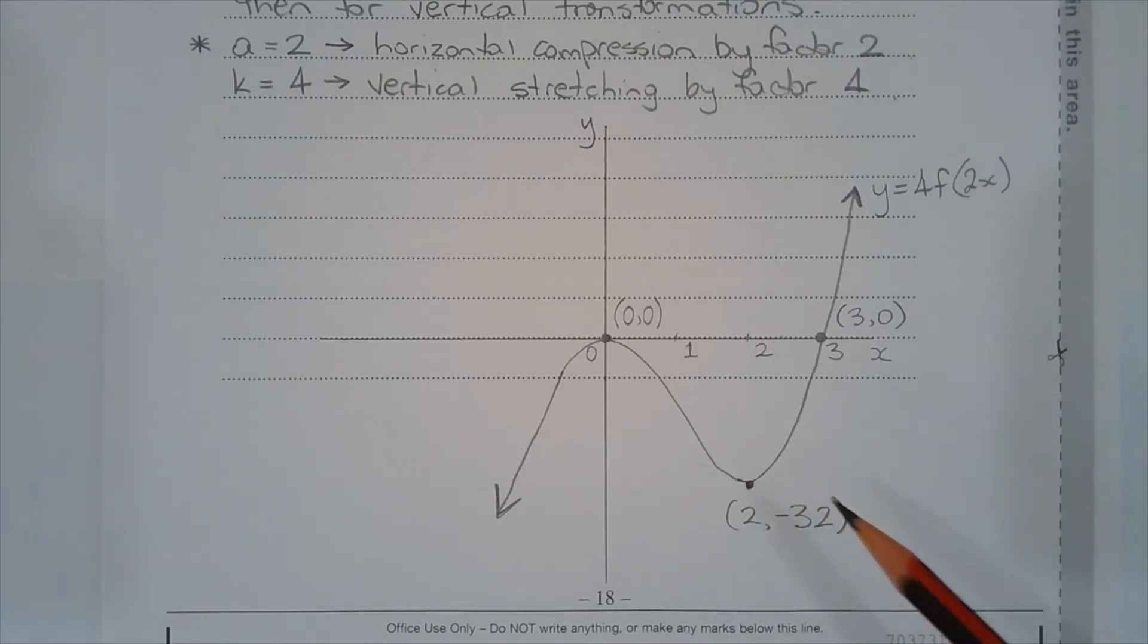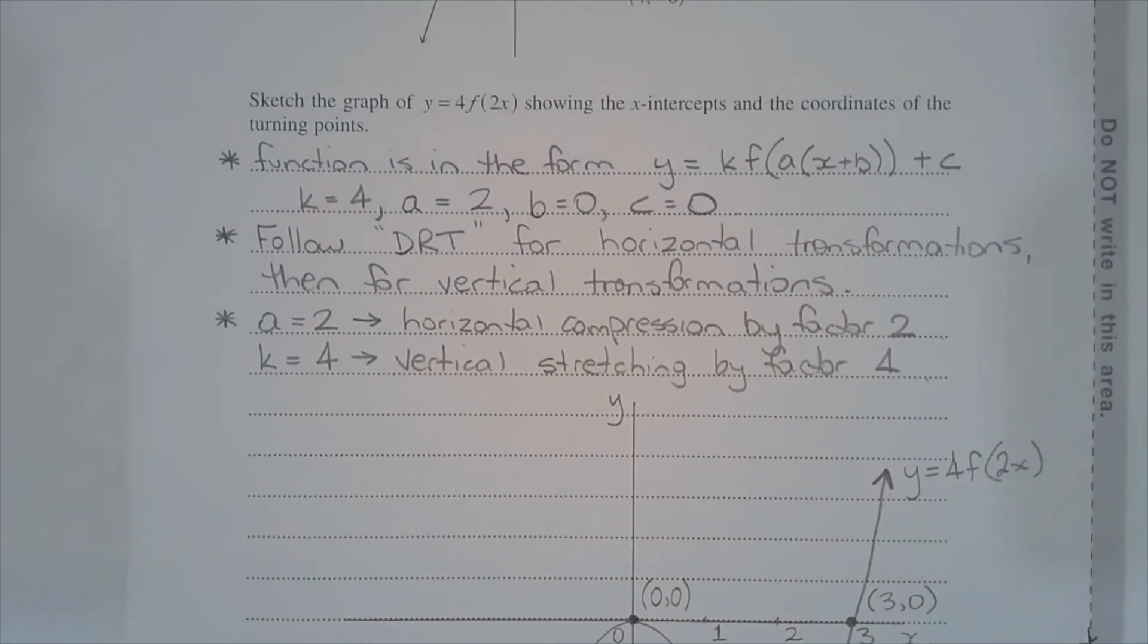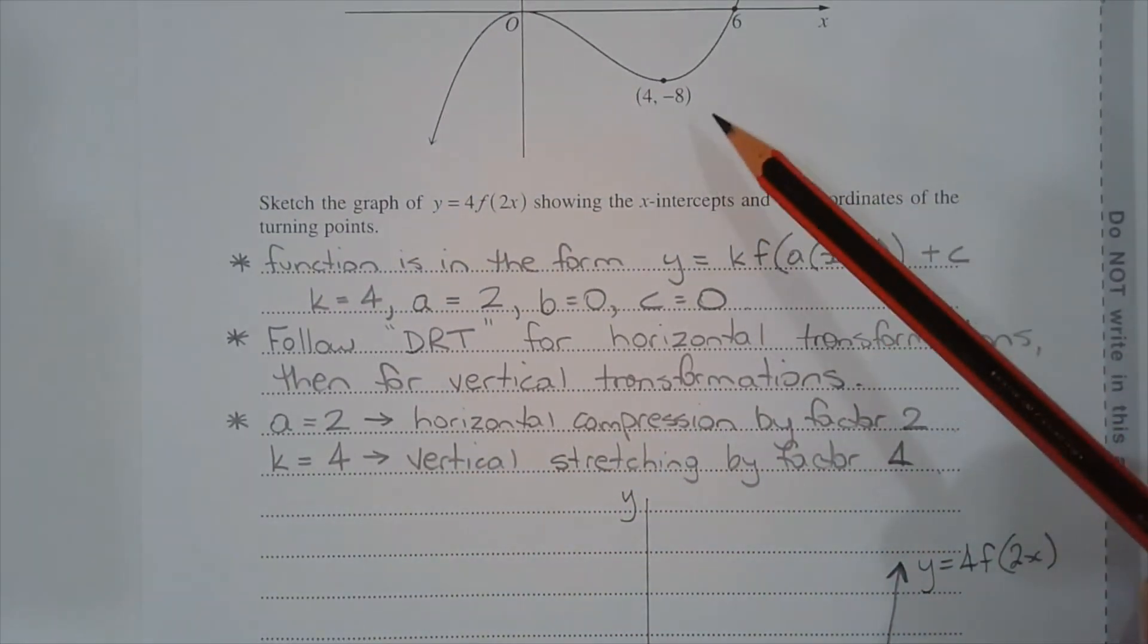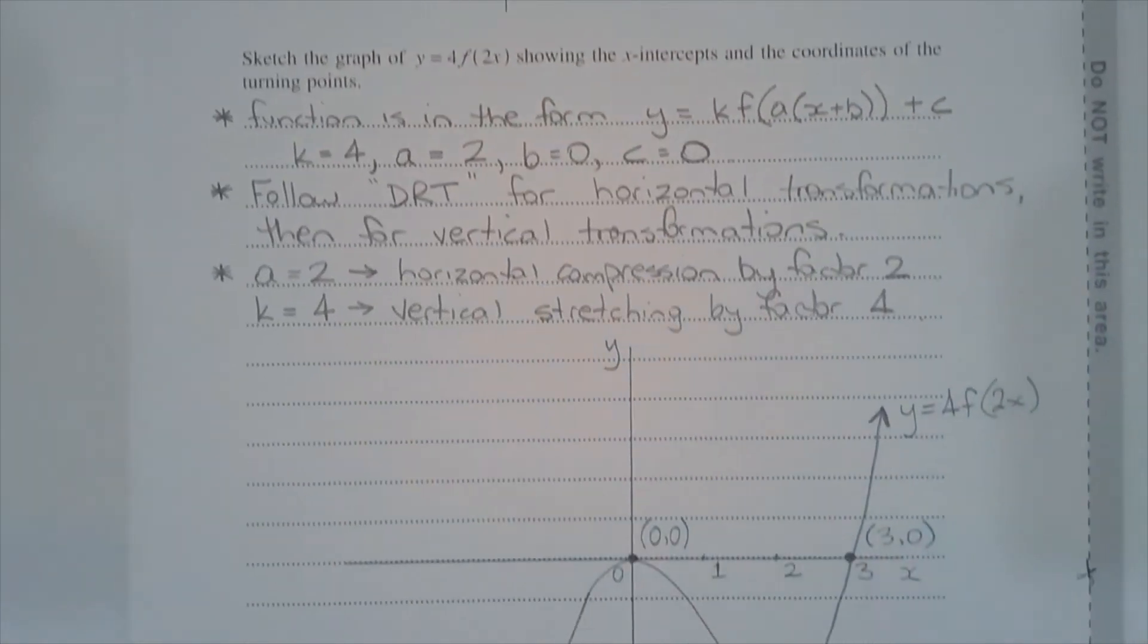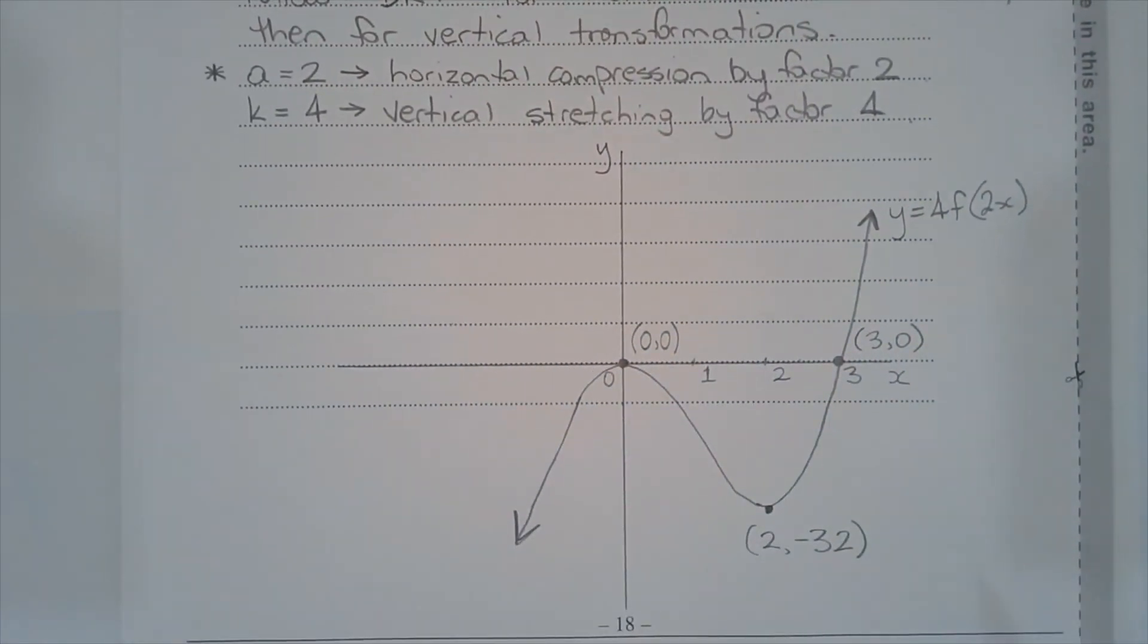Horizontally dilating the stationary point, so that's 4, negative 8. The 4 is divided by 2, but the negative 8 is multiplied by 4. And we end up with this point here.